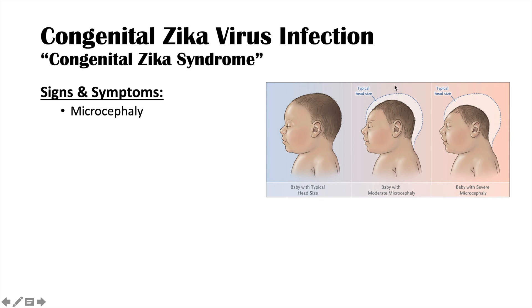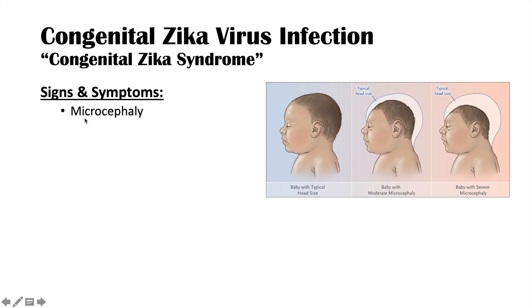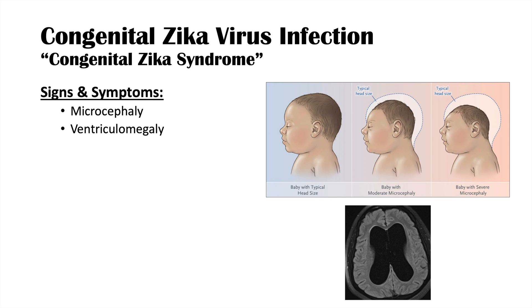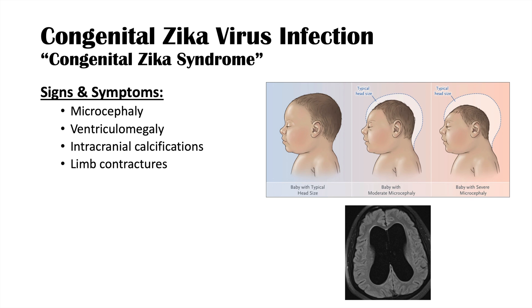Signs of congenital Zika syndrome include microcephaly — a smaller-than-normal brain and head, which can range from moderate to severe — ventriculomegaly due to enlarged brain ventricles from reduced brain tissue, and intracranial calcification visible on imaging. Additional findings include limb contractures, hearing loss, and visual abnormalities, all resulting from the neurological destruction caused by the virus.